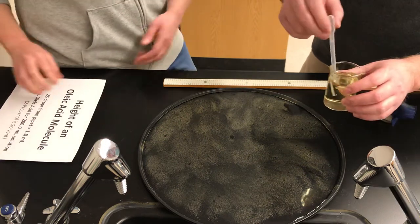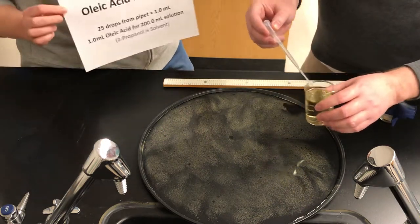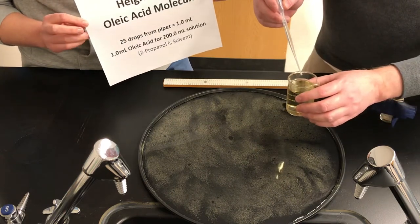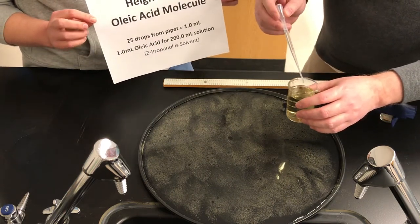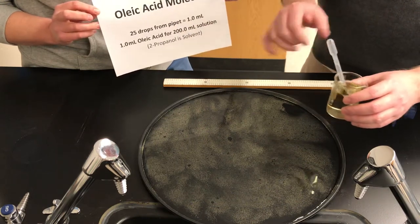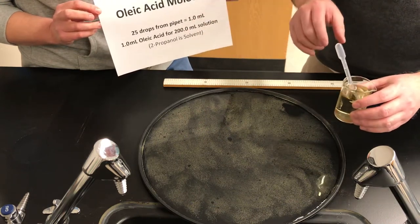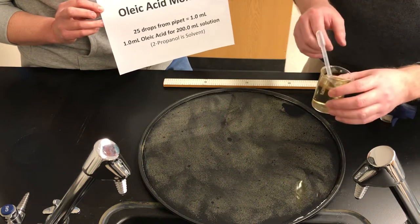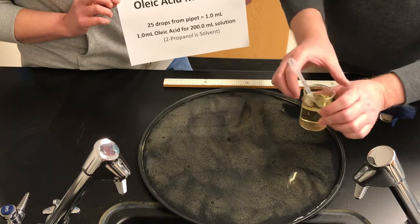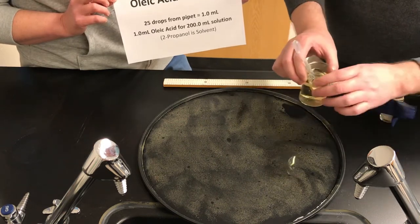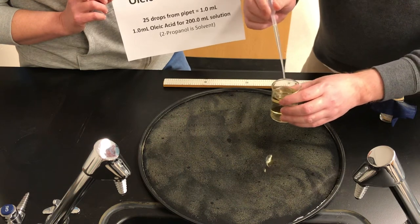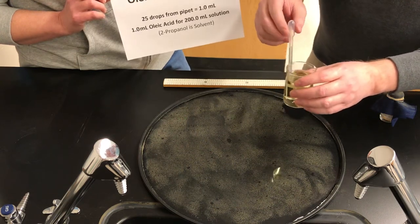Now, on the original sheet, it told you that we're using a plastic pipette that has, we measured that 25 drops from this pipette gives us one milliliter of solution. So you're going to want to make sure you've written down both of those pieces of information. The solution is, again, one part or one milliliter oleic acid for every 200 milliliters of solution. And also that there's 25 drops from this pipette will give you one milliliter.